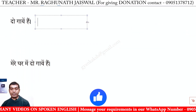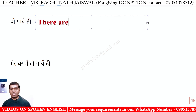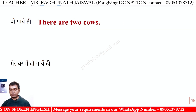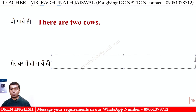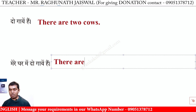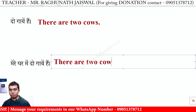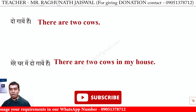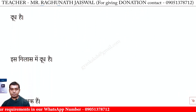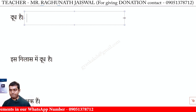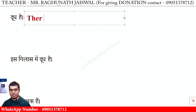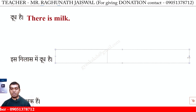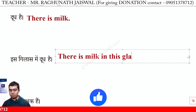Do gaay hai — There are two cows. Mere ghar mein do gaay hai — There are two cows in my house. Dood hai — There is milk. Is glass mein dood hai — There is milk in this glass.